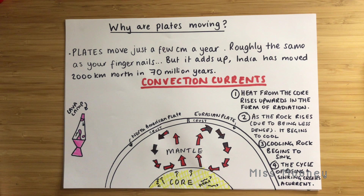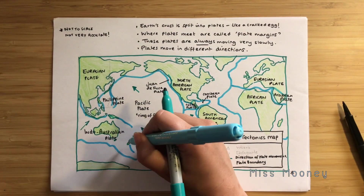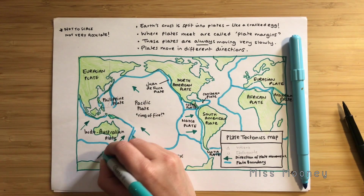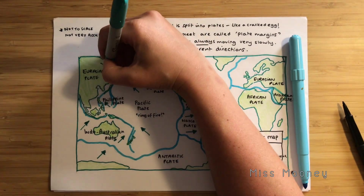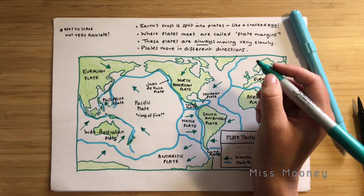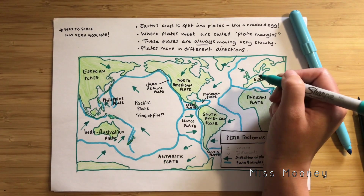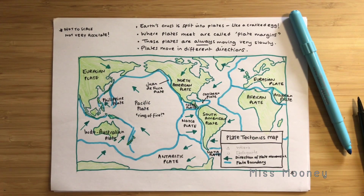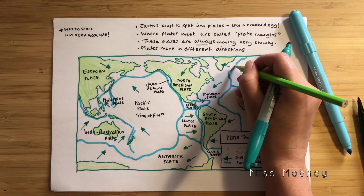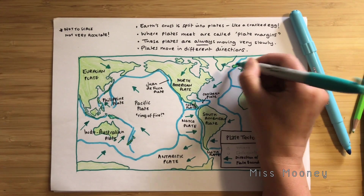Depending on which way these currents move, the earth's crust and plates are pushed in corresponding directions. These convection currents are regular, which is why we can see on the plate tectonic boundaries map where the plates are moving. For example, the North American plate and the Eurasian plate are moving apart from each other — this is where Iceland is located, sitting right where those two plates diverge.